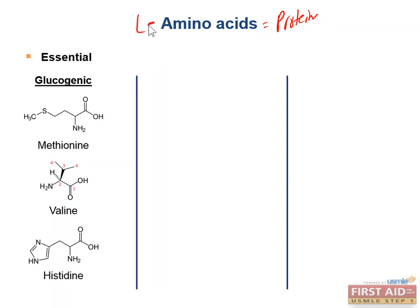Only the L form of amino acids — the lovely form, as I think of it — are going to be found in proteins. These amino acids can be categorized as either essential or non-essential, and whether they're acidic, basic, or neutral. We're going to classify these amino acids based on their properties.